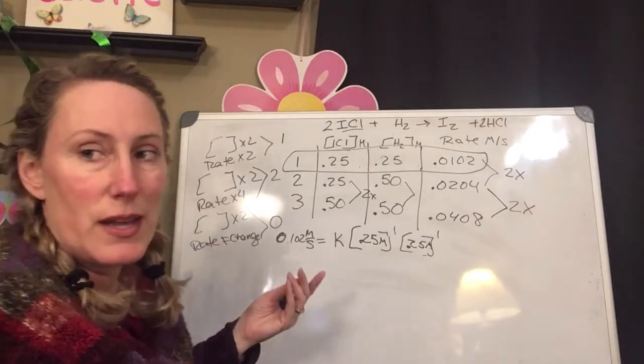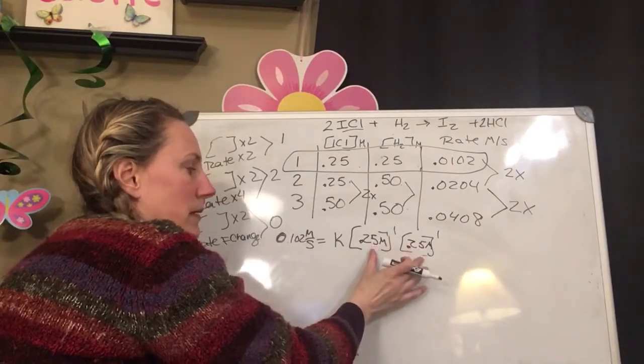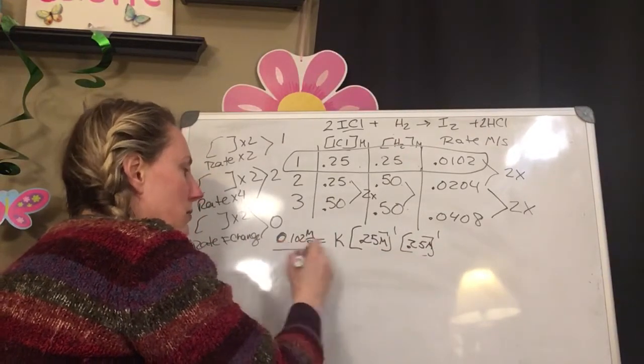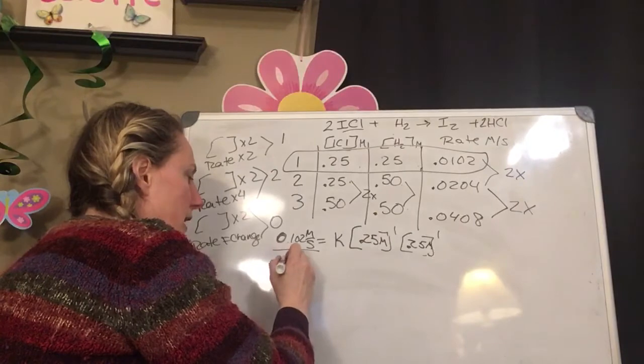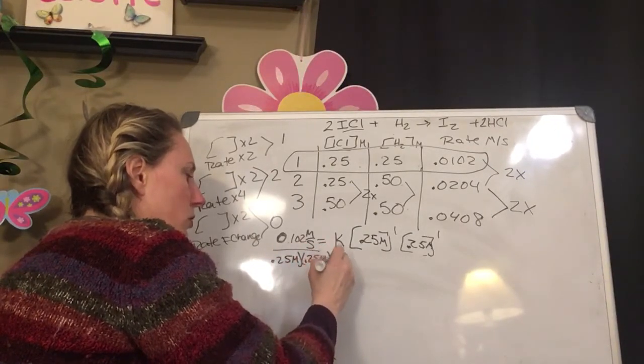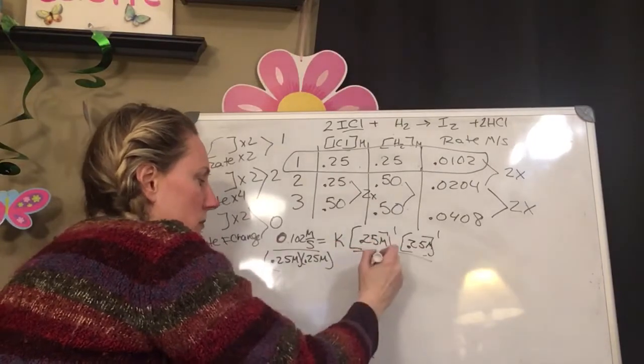So I can do that and, you know, I would maybe multiply these together and then divide this by that. But really what I'm doing is doing 0.25 molar times 0.25 molar. I'm going to read 25. 0.25. So that cancels out. So I get my k all by itself.